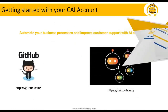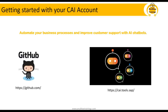We will first get started with our CAI account — CAI stands for Conversational AI. SAP is offering a free trial account for conversational AI, which allows you to automate your business process and improve customer support with the help of AI chatbots. To create your free account, it is good practice to first get a free GitHub account, because all the data related to your chatbot will be stored in GitHub. So first go to github.com and subscribe for a free account, then get started with cai.tools.sap.